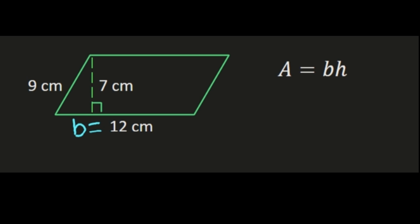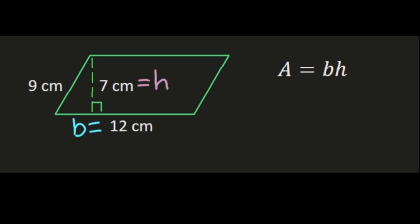That's going to be this dotted line right here, and that line is 7 centimeters long, so our height of this parallelogram is going to be 7 centimeters. In our formula we only need base and height, so we're not going to be using the 9 centimeters marked as the length of one of the sides of our parallelogram.